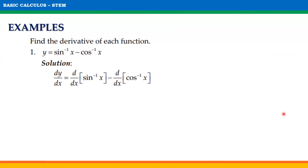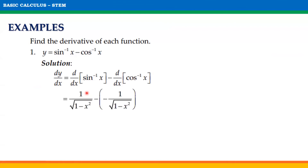To find the derivative of this function, we will have dy/dx = d/dx of arcsin(x) minus d/dx of arccos(x). Applying the theorem earlier, d/dx of arcsin(x) = 1 / √(1 - x²), while d/dx of arccos(x) = -1 / √(1 - x²). Simplifying this,